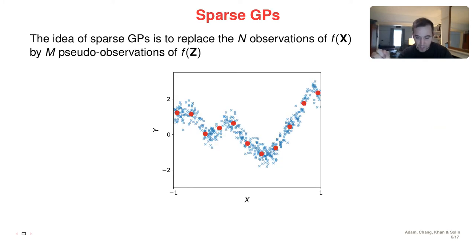So Sparse GPs is a set of algorithms that replace the n observations of the function at the data points by m pseudo observations of the same function at a set of inducing points z. So the idea is to compress the information provided by the many blue data points here into a smaller set of data points, pseudo data points, the red ones. And the idea is you introduce a pseudo observation model, so pseudo likelihood as well.